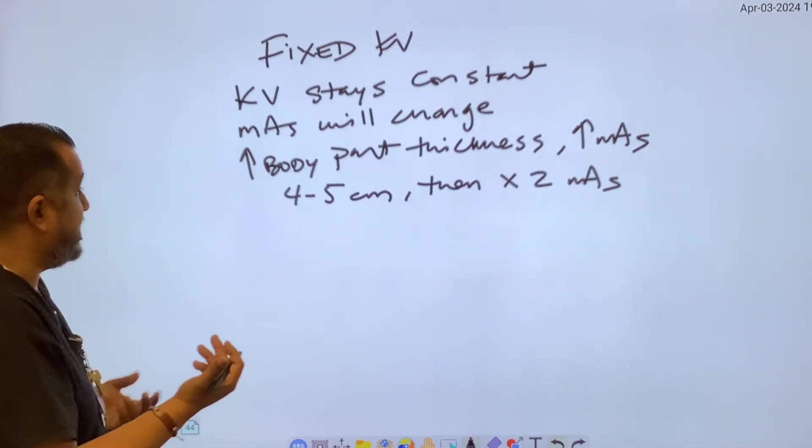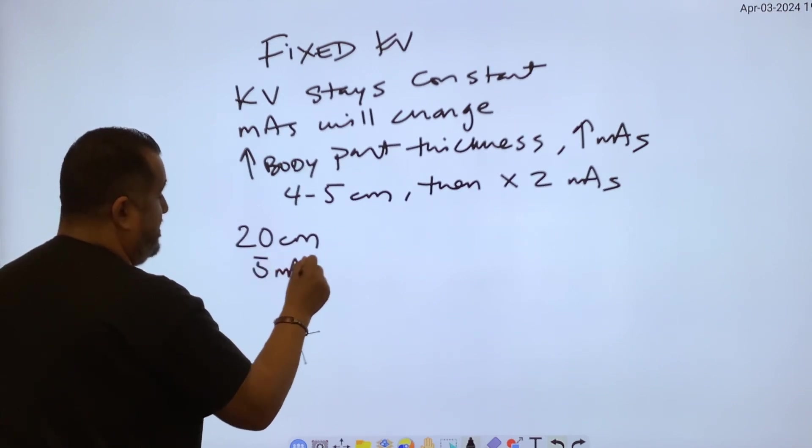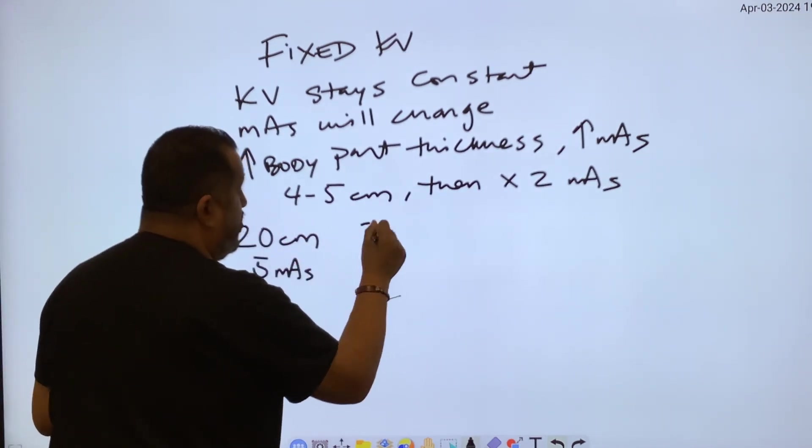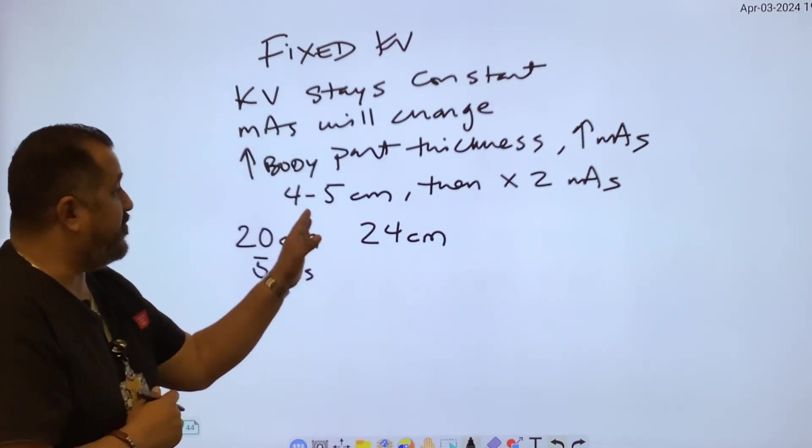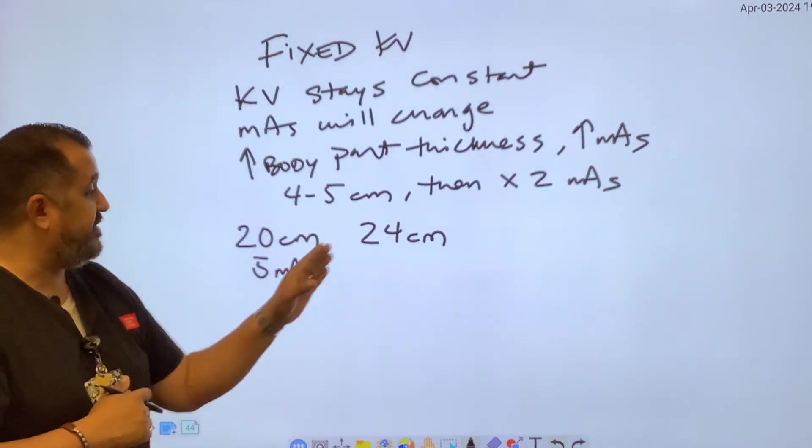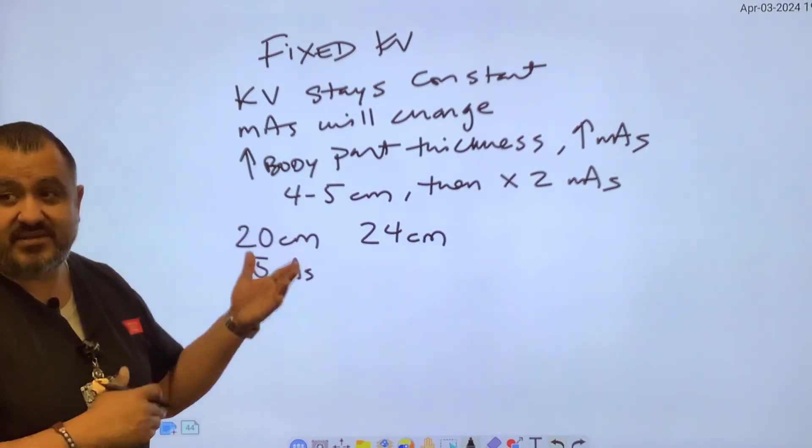For an example, if you had 20 centimeters and you had 5 mAs and now it's jumping to 24 centimeters, well, we just said for every four to five centimeters, you would have to double your mAs, correct? So your new mAs would be 10 mAs.